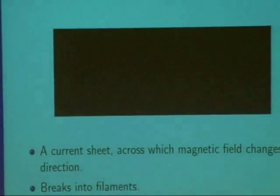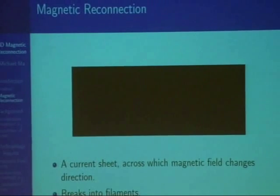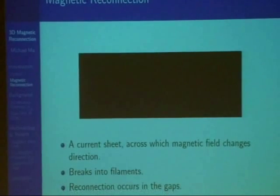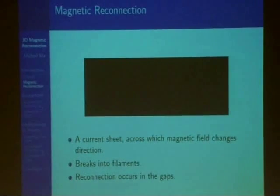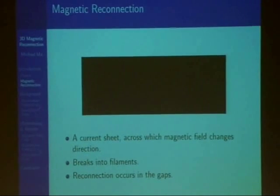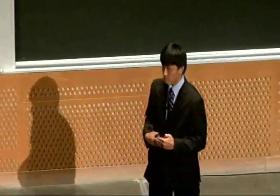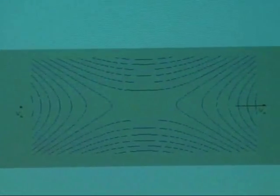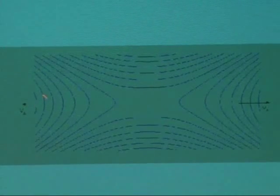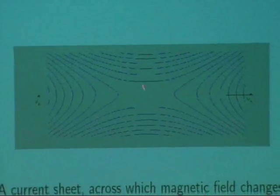My study focused on a certain phenomenon in plasma called magnetic reconnection. Basically what happens in plasma is that there's this current sheet across the plasma, and across the two sides of the current sheet, the magnetic field changes direction. When the reconnection process occurs, this current sheet breaks into bar-shaped filaments, and the reconnection occurs in the gaps. You can see a reconnection happening here with the field lines coming toward each other, and the filament would be here and here, and the reconnection is occurring there.